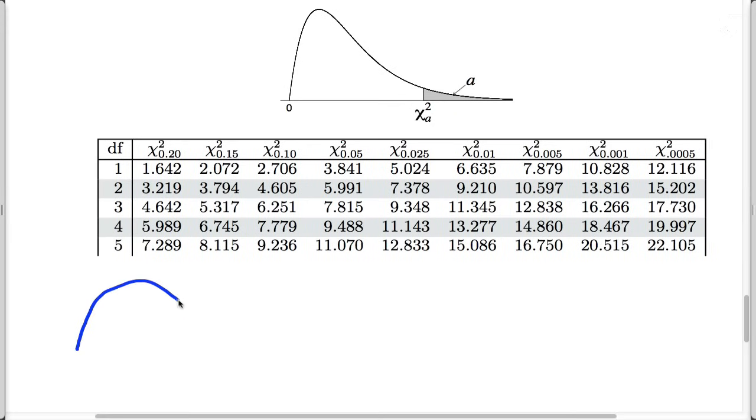What we want is the area to the right of 7.1. That's what we're looking for here, this area. And if we go up here to 3 degrees of freedom, we would see that 7.1 falls in between these two values.